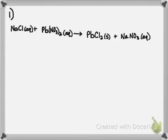Going from left to right, on the reactant side we have 1 Na, and we also have 1 Na on the product side. Next up is Cl. We have 1 Cl on the reactant side, but we have 2 Cls on the product side. So to balance the Cls, we're going to put a coefficient of 2 in front of NaCl. That will balance our Cls; however, this now changes the number of Na's on the reactant side to 2.